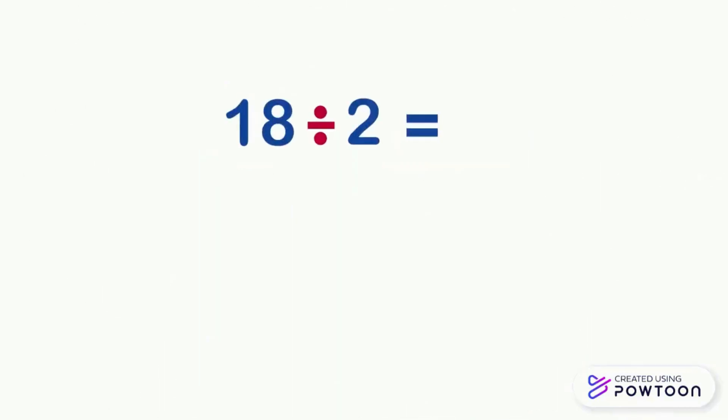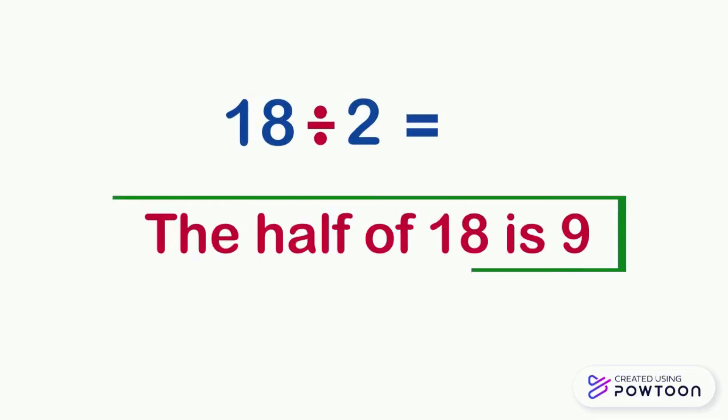To solve this division equation which is 18 divided by 2, we should just find the half of 18, which is 9. So 18 divided by 2 equals 9.